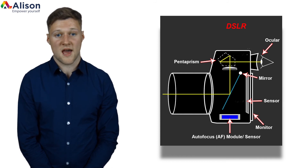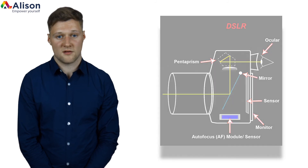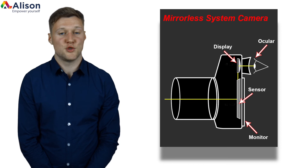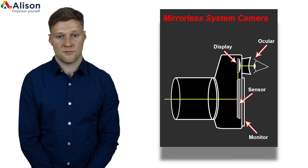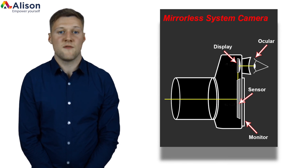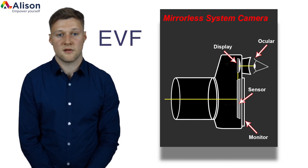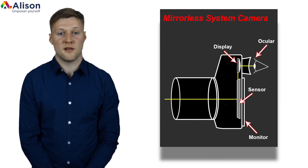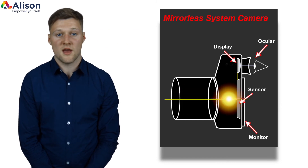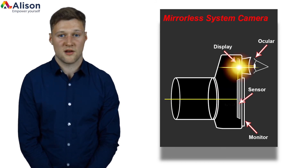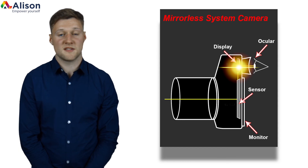Light then reaches the camera's sensor. Mirrorless and bridge cameras don't have mirrors inside them — instead they have an electronic viewfinder, also denoted as EVF. When light passes through the lens of these cameras it goes straight to the imaging sensor, which sends a signal to the viewfinder, allowing us to see the scene.